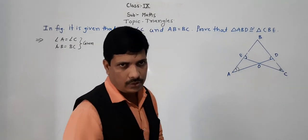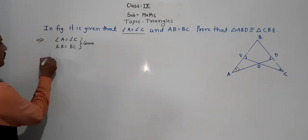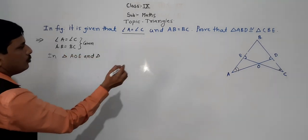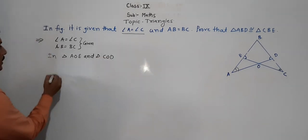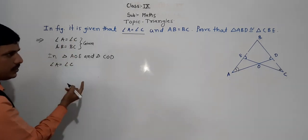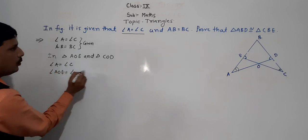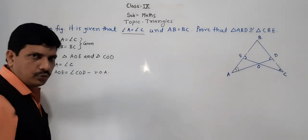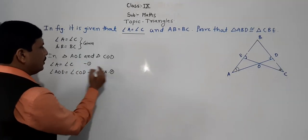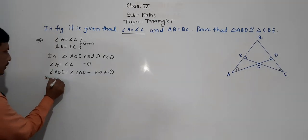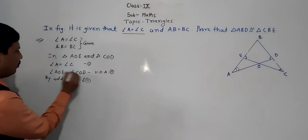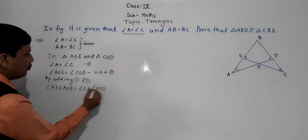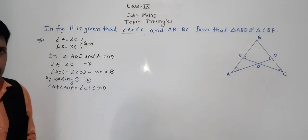Now we can prove the triangles are congruent. In triangle AOE and triangle COD: angle A is equal to angle C, which is given; angle AOE is equal to angle COD, which are vertically opposite angles. Adding these: angle A plus angle AOE is equal to angle C plus angle COD.